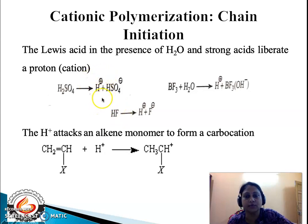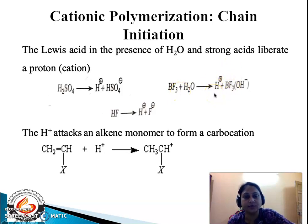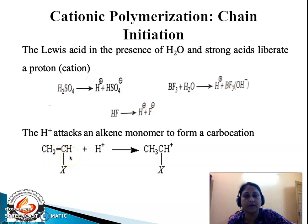You can see that this is the proton liberated from the acids. Similarly, H⁺ ions are also liberated by the action of water on Lewis acids — in this case, boron trifluoride. Once the proton is liberated, it attacks an alkene monomer to give rise to a carbocation, which has a net positive charge. The monomer must have, besides the double bond, electron-releasing substituents like alkyl groups, phenyl groups, or vinyl groups. The net result of chain initiation is a carbocation.